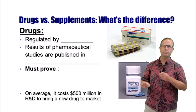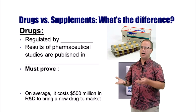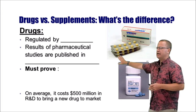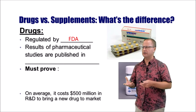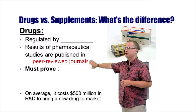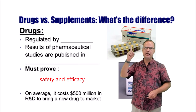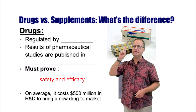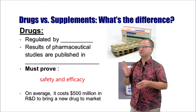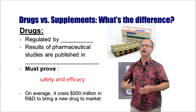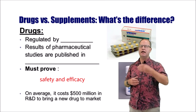This brings up an important distinction: the difference between a drug and a supplement. Drugs are regulated by the FDA. To get approved, they must go through rigorous clinical trials — usually costing upwards of $500 million — and the results must be published in peer-reviewed journals. The FDA requires proof of two things: safety and effectiveness. Supplements, on the other hand, are largely not regulated by the FDA unless a problem is identified. Few supplements have been investigated in rigorous clinical studies, so we really don't know much about their safety or efficacy.